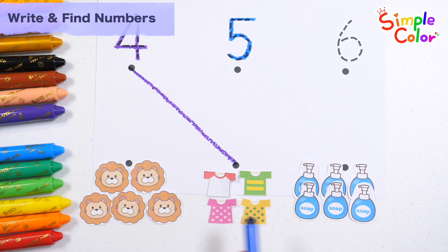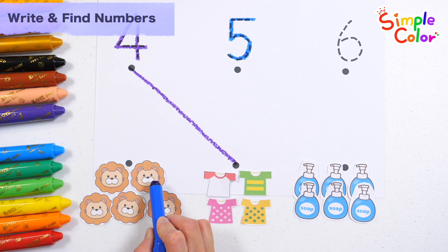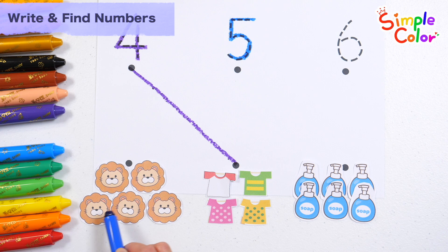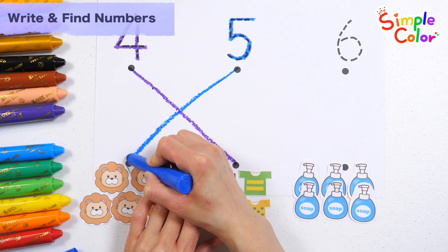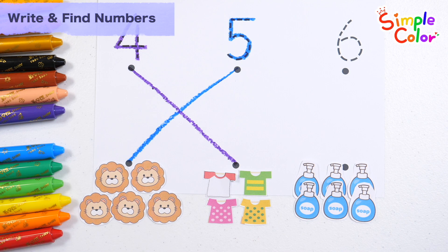Five. One, two, three, four, five. Five. Let's connect it with a line. Five. Five lions.